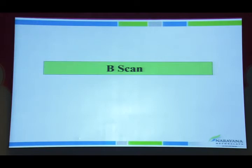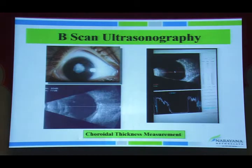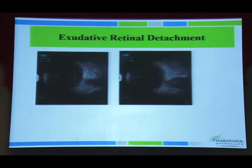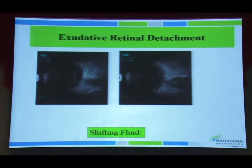Moving to posterior segment imaging: B-scan is commonly used when a complicated cataract prevents visualization of the posterior segment. In addition to seeing structures, we also measure choroidal thickness in the peripapillary region. In exudative retinal detachment, we demonstrate shifting fluid — in a patient in supine versus sitting position, the amount of exudative fluid is seen to increase.